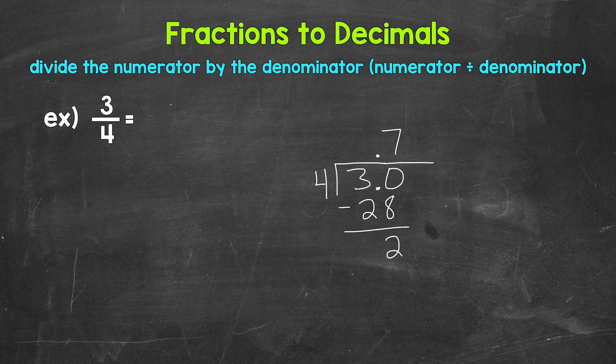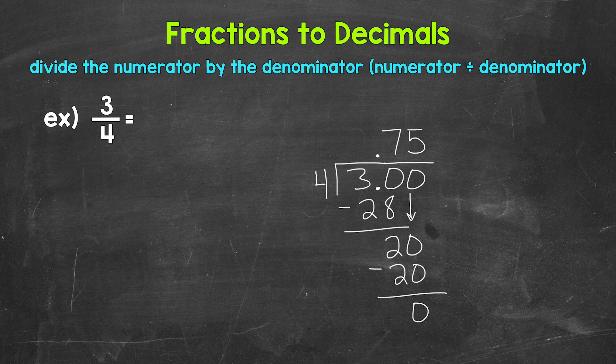Now we don't have a clean cut zero there at the bottom, so we need to continue on here. We do that by using another zero that we can bring down. Now we have 20. 20 divided by 4 gives us 5. 5 times 4 is 20. Subtract: 20 minus 20 is zero. Now we have that clean cut zero there at the bottom and nothing else to bring down within our problem.